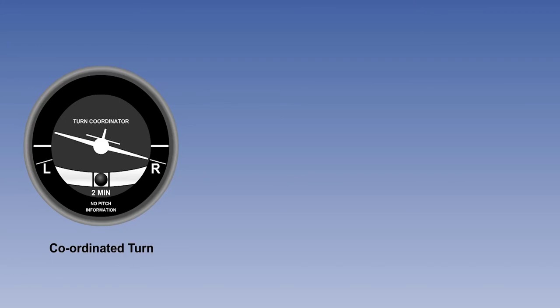Sideslipping towards the centre of the turn moves the ball to the inside of the turn, and vice versa. Changing the angle of bank can also restore balanced flight, but will alter the rate of turn.